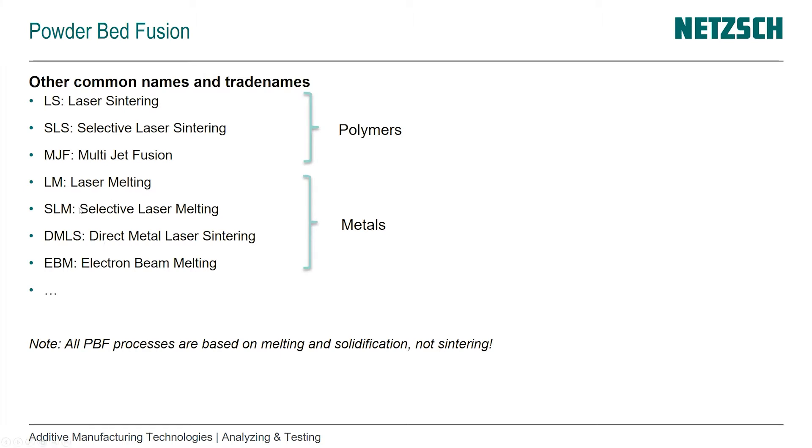For the metal group: LM (laser melting), SLM (selective laser melting), and DMLS (direct metal laser sintering) all use lasers. EBM (electron beam melting) also uses powder but the energy source is an electron beam instead of a laser — so it's the electrons rather than photons being excited. Importantly, although polymer processes are often referred to as sintering, powder bed fusion processes are all based on melting and solidification, not sintering. Sintering is reserved for other processes discussed in other videos.